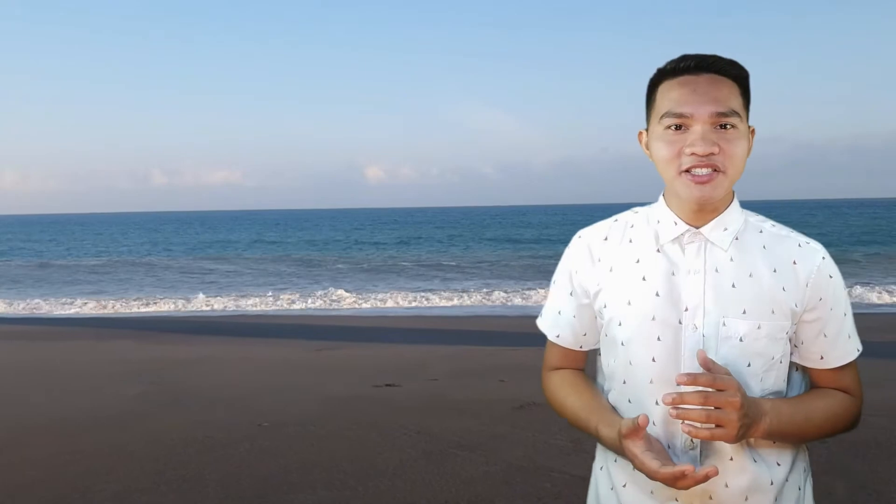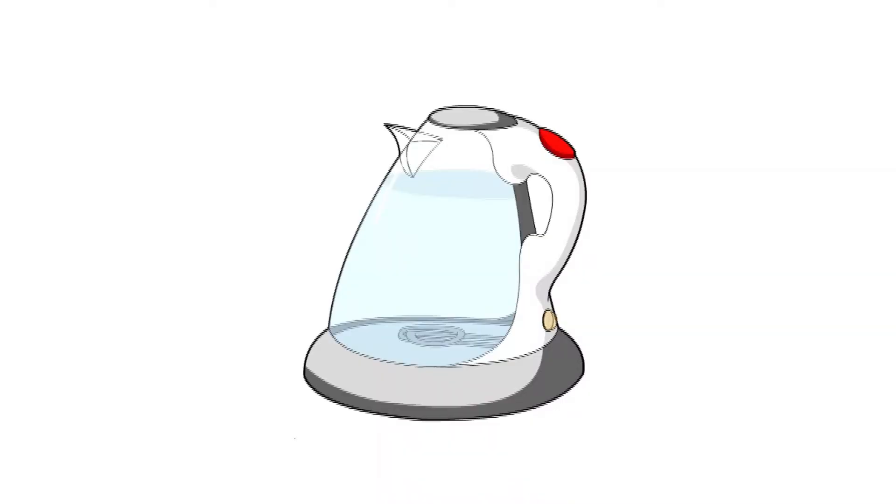When you want to have a cup of tea on a cold morning and you want to use the kettle to boil water, convection occurs. When the kettle is turned on, the heating element warms up and heats the water around it.